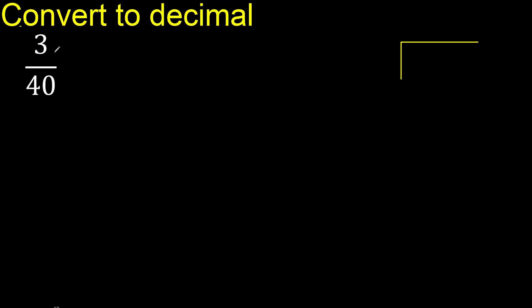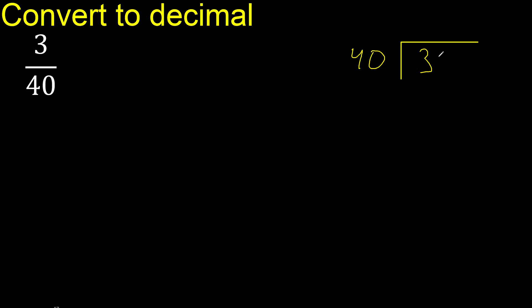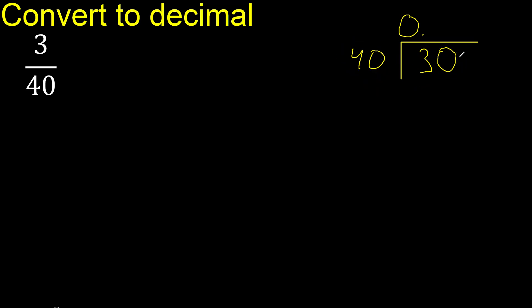3 divided by 40. 3 is less than 40, therefore complete — always complete with 0, and here 0 point — point only once. 30 is less than 40, therefore add another 0.